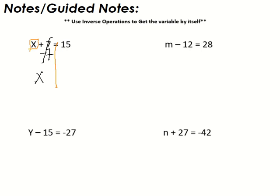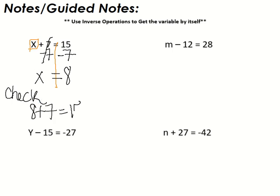Because this is an equation and it's a balance, everything I do to one side I have to do to the other side. If I only subtracted 7 from the left side, my balance would tip. So the equal sign goes back here, and we do 15 take away 7, and we get 8. So x equals 8. We can check that by plugging our answer back in: 8 plus 7 does in fact equal 15. Check.